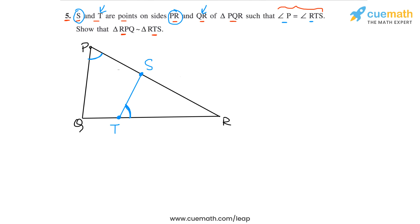Let me highlight these two triangles for you with the correct order of the vertices in mind. So we have to show that triangle RPQ, I'm going to highlight the sides now, RPQ, this is the first triangle.